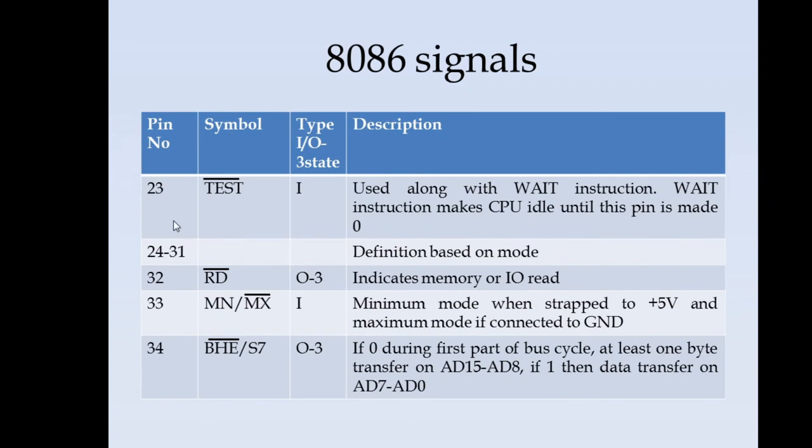Pin number 23 is test active low signal. It acts as an input. This test signal is used along with the wait instruction. Wait instruction makes the CPU idle. As long as this test pin is made low, if this test pin is low and if the wait instruction is used, the CPU will be put into idle state.